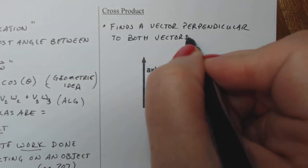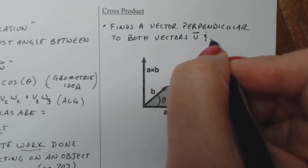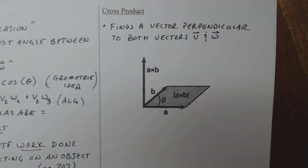Finds a vector perpendicular to both vectors, in this case V and W. Now, this particular graph isn't labeled with V and W, but that's okay. I'm going to label it.